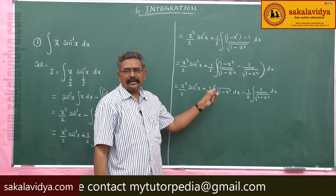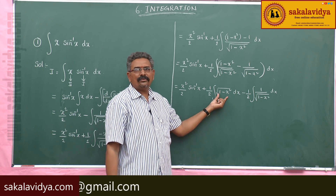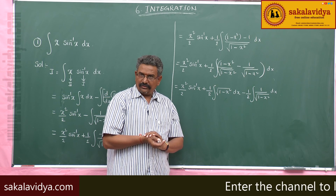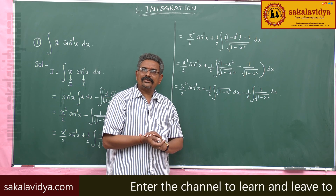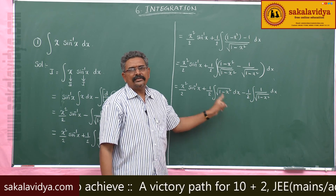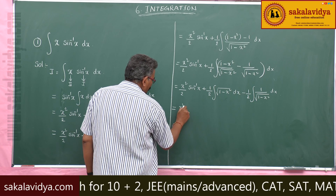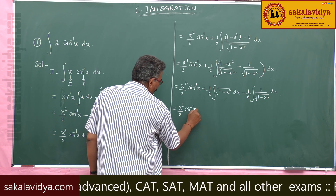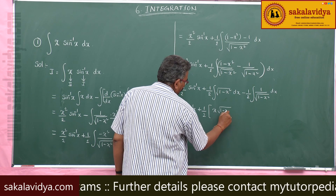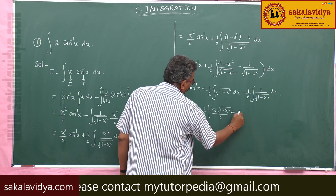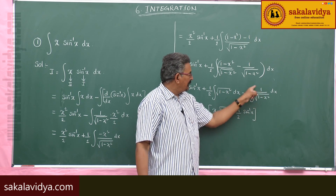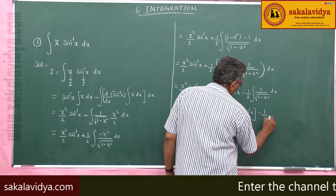The integral of √(1−x²) dx is in the form of ∫√(a²−x²) dx. We know that ∫√(a²−x²) dx equals x·√(a²−x²)/2 plus a²/2 · sin⁻¹(x/a). Using that formula with a=1, we can write this value. Also, the integral of 1/√(1−x²) dx is simply sin⁻¹x.